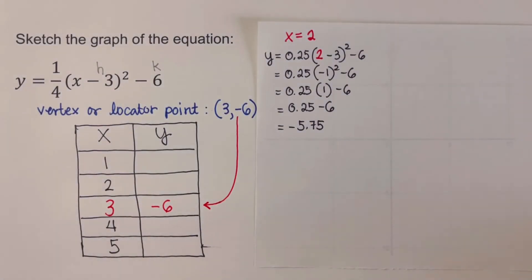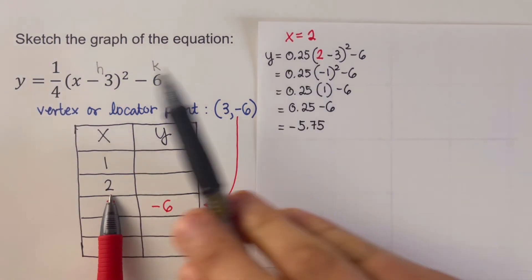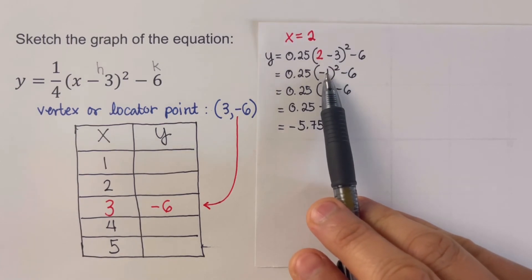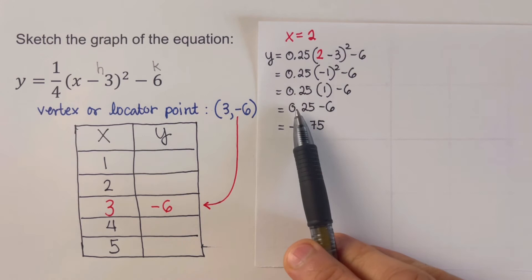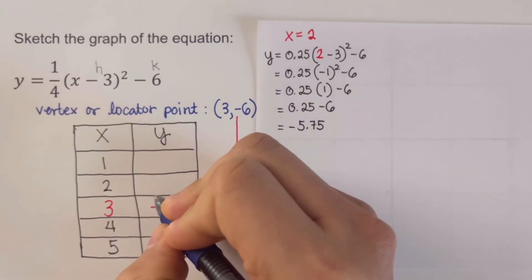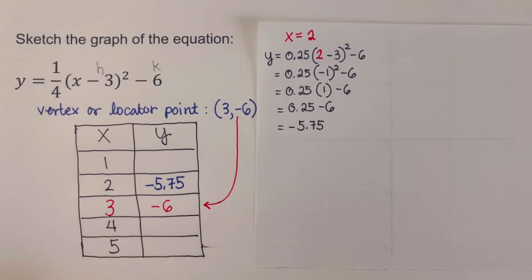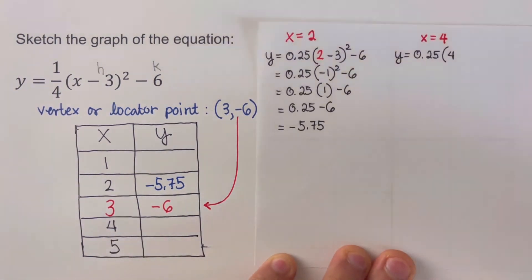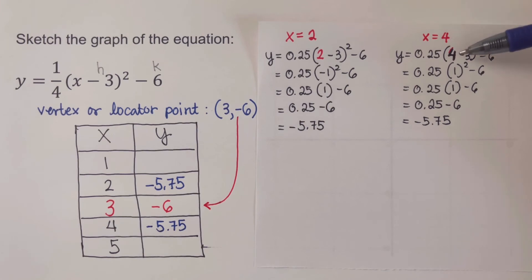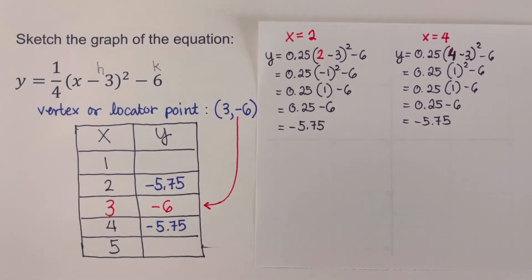For x = 2: converting one-fourth to 0.25, we get y = 0.25 times (2 − 3) squared minus 6. That's 0.25 times (−1) squared minus 6 = 0.25 times 1 minus 6 = −5.75. For x = 4: y = 0.25 times (4 − 3) squared minus 6 = 0.25 times 1 minus 6 = −5.75. The remaining values for x = 1 and x = 5 are also calculated.